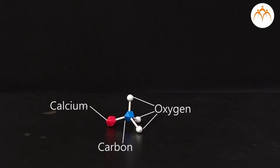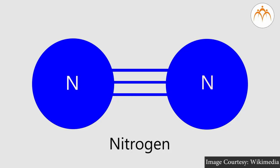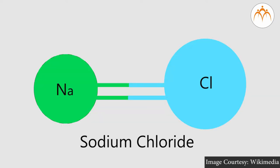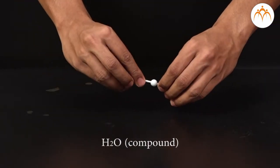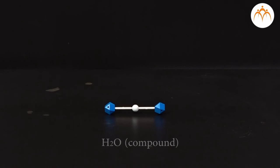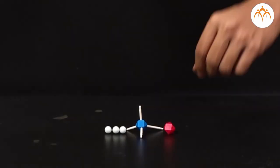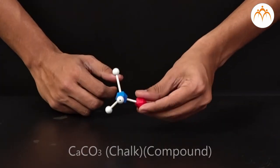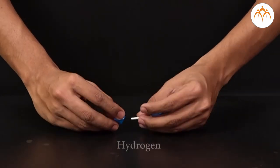What is the difference between molecules of elements and compounds? The molecules of elements contain the same type of atoms, whereas a molecule of a compound is made up of different types of atoms. Examples include molecules of H₂O, NaCl, and CaCO₃, as well as molecules of hydrogen.